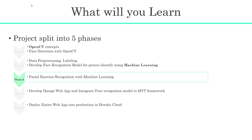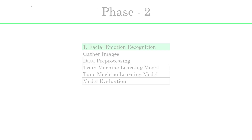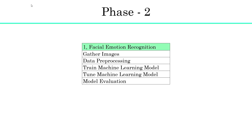Then we move to Phase 2 of the project, where we are going to build another face recognition model — Facial Emotion Recognition. This is similar to Phase 1: we also do data gathering, data preprocessing, and train the machine learning model.